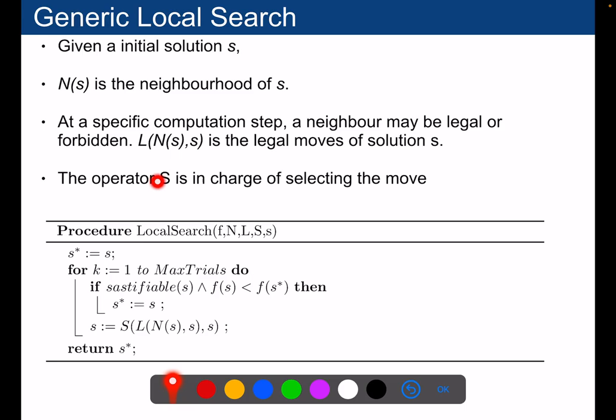And then S will be the operator in charge of selecting the best move among the legal moves. So what you will do is that you will compute the neighborhood, then you will filter the legal moves, and then you will select among these legal moves one of them, and this will be the next candidate solution.